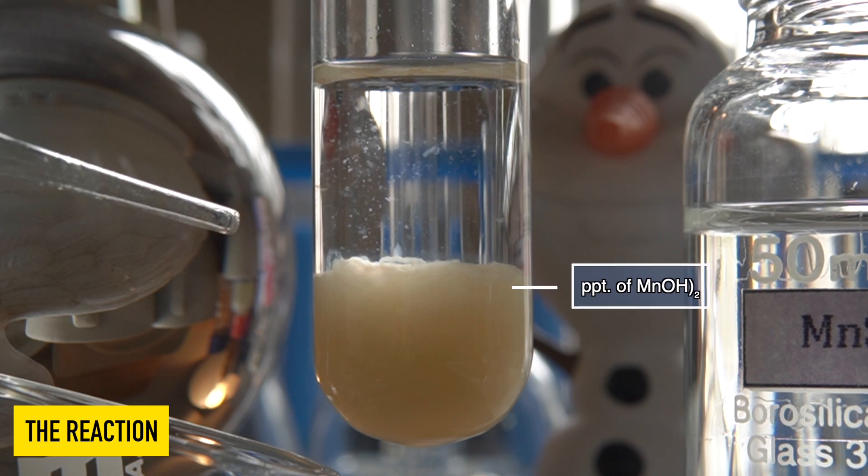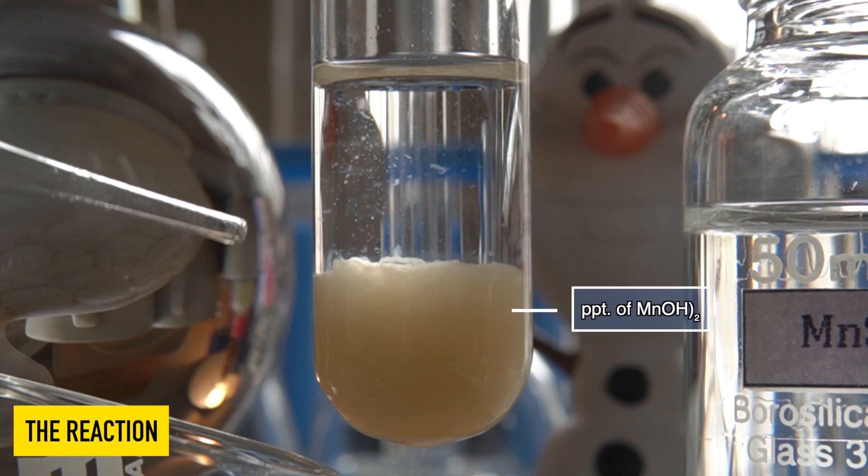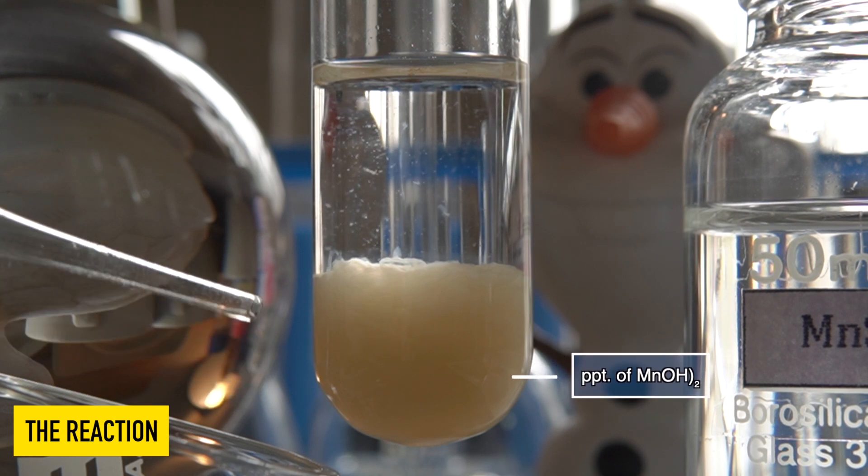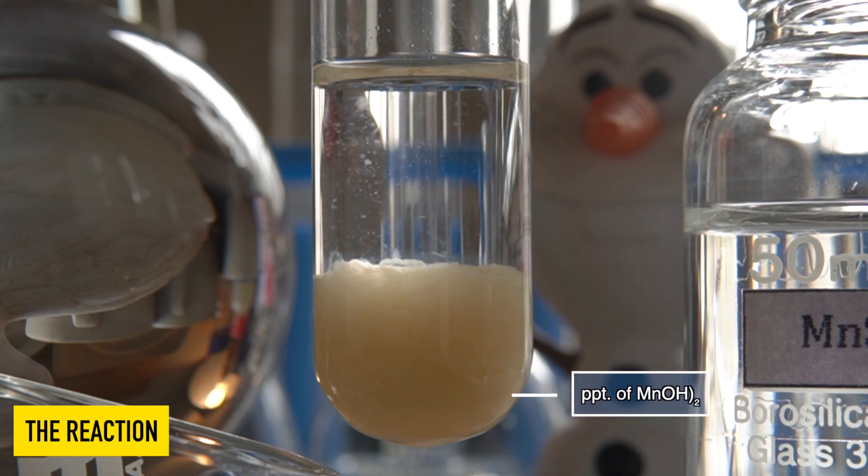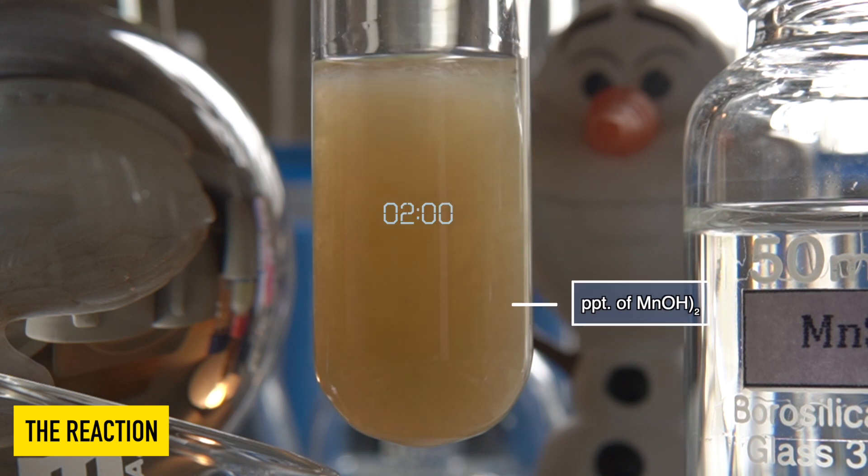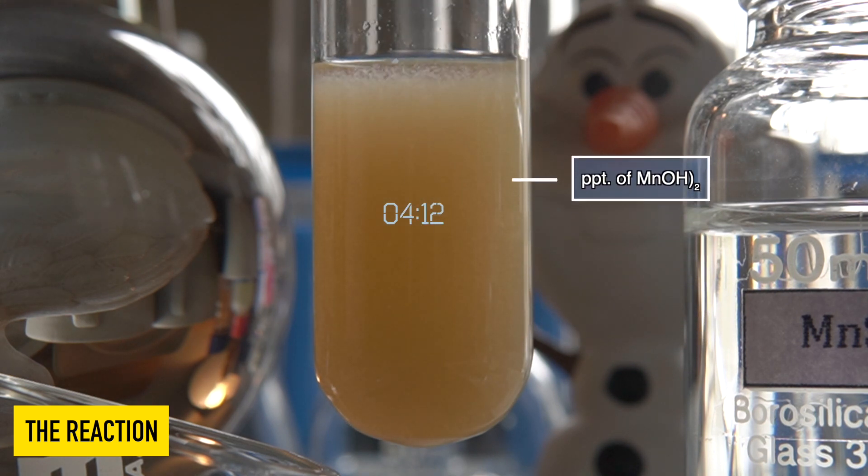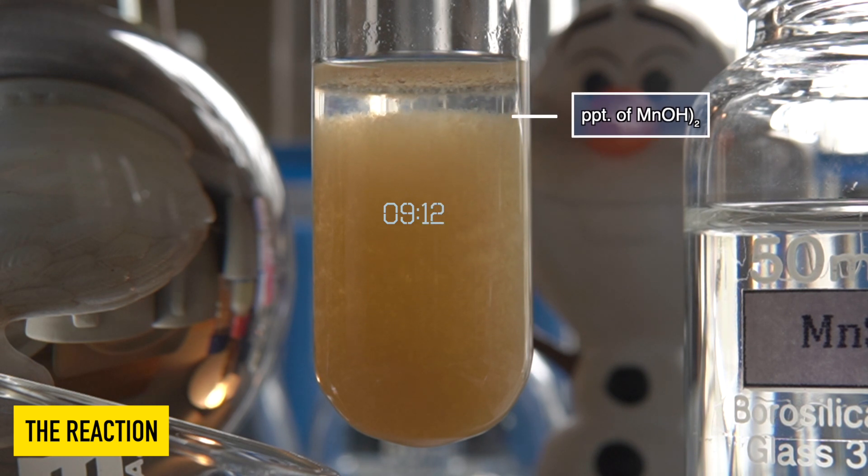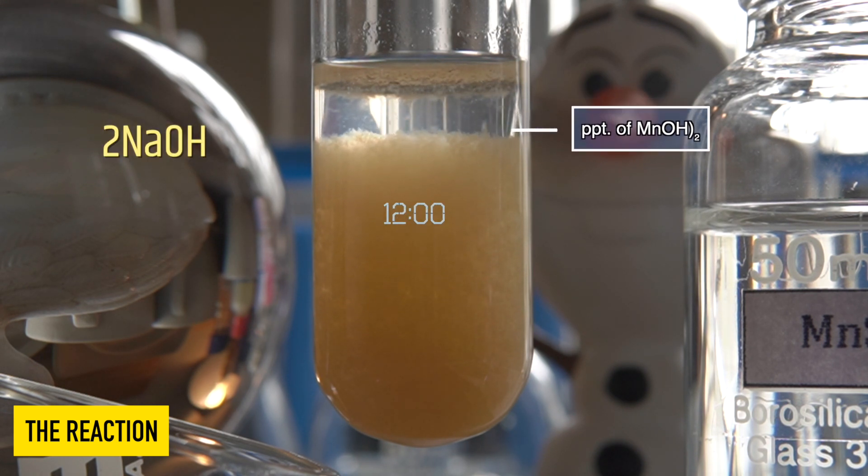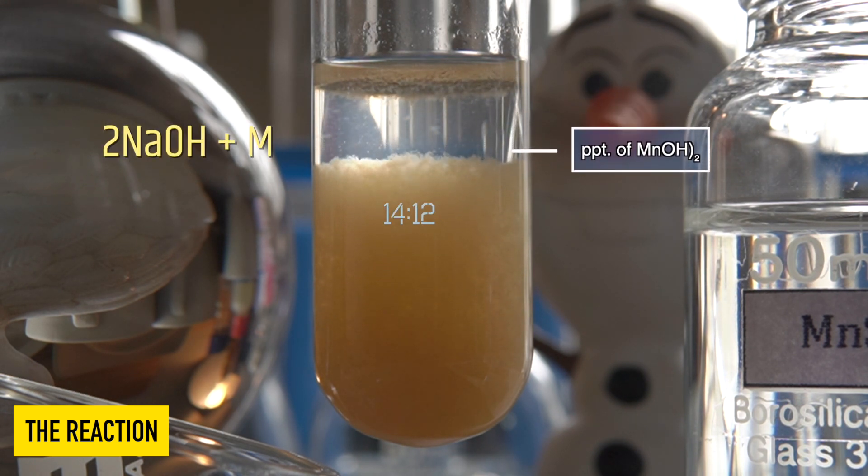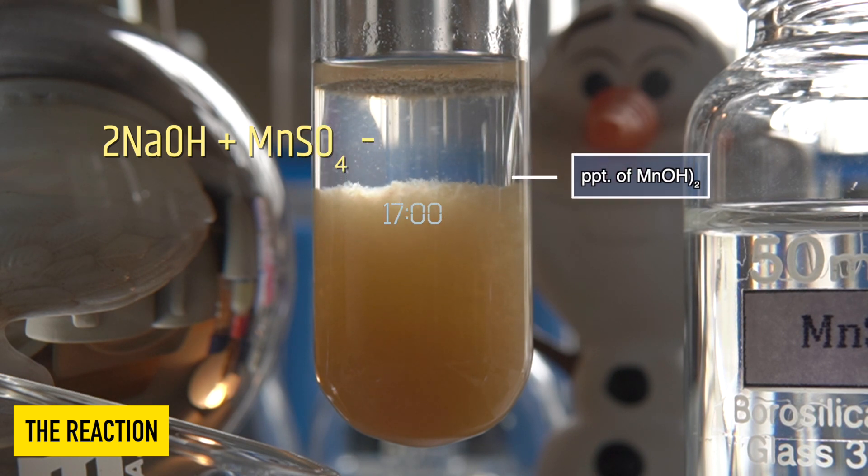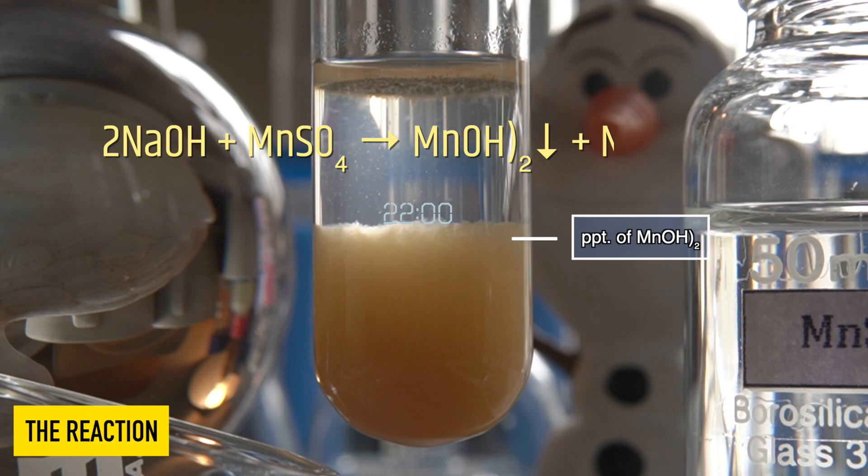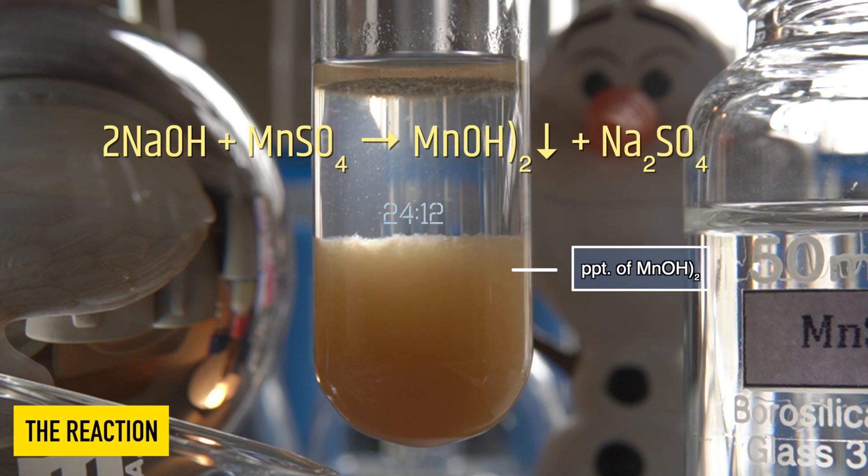The brownish insoluble precipitate that has formed at the bottom of the test tube is manganese(II) hydroxide. In this reaction, sodium hydroxide reacts with manganese(II) sulfate to produce an insoluble precipitate of manganese(II) hydroxide along with sodium sulfate.